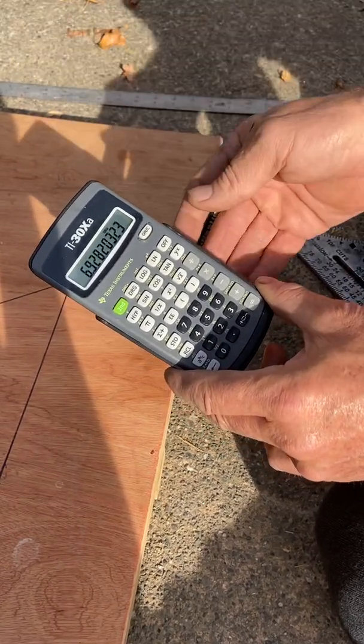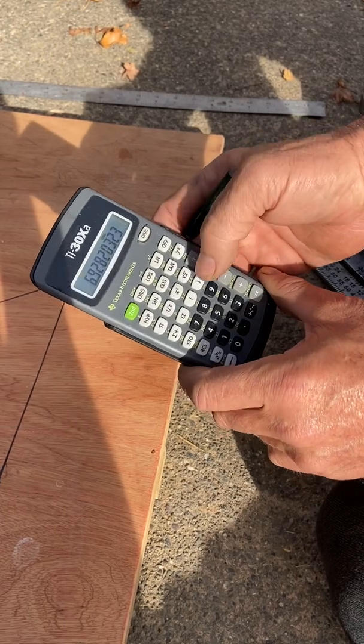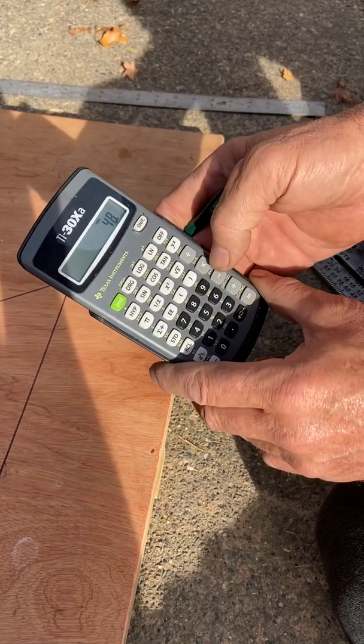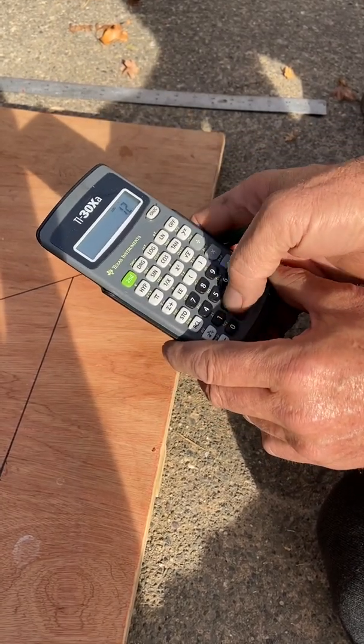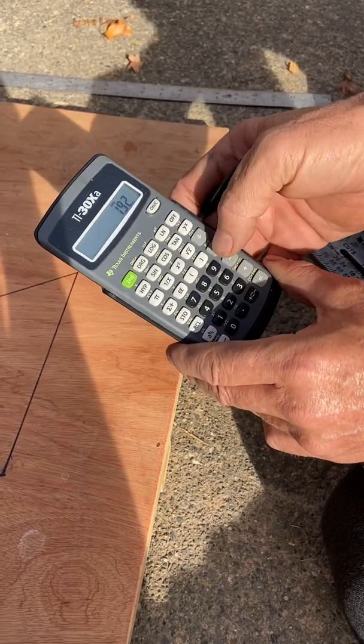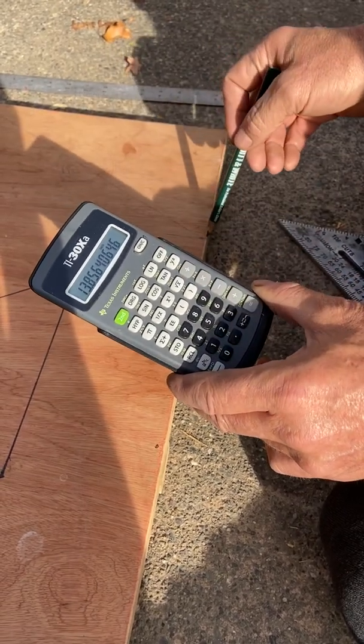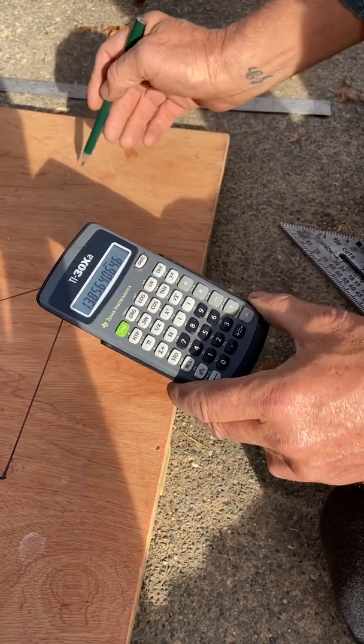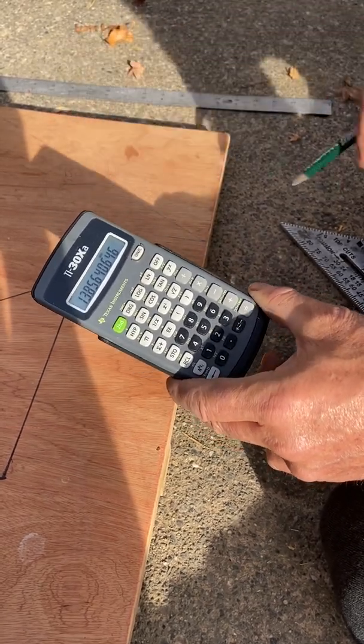But we want to find the rake, so what we do is say a² plus 12² equals the square root of... So a² + b² = c², and this is 13.85.